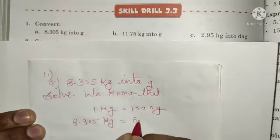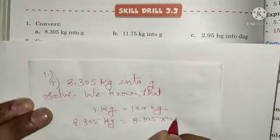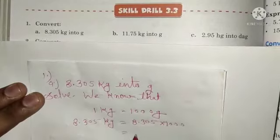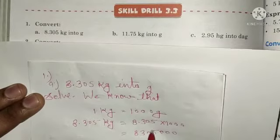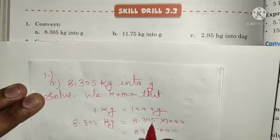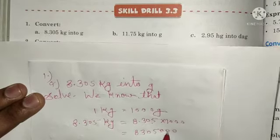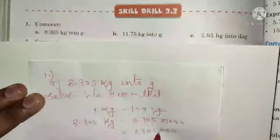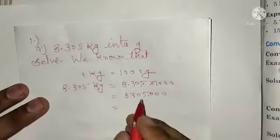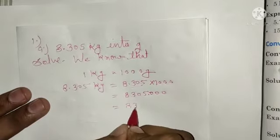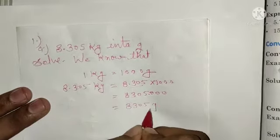Multiply 8.305 × 1000. Look at this point — after 3 digits, move the decimal 3 places. So our answer will be 8305 g.